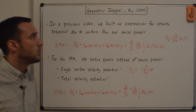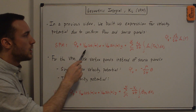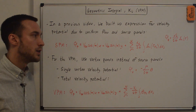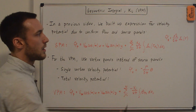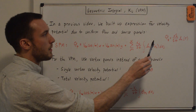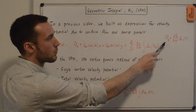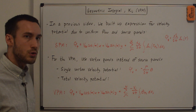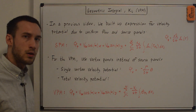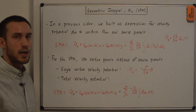Hey everyone. In a previous video we built up the expression for the velocity potential phi_p due to uniform flow and source panels that approximate the geometry of an airfoil. The term for a single source comes from building up more complex flows from a single source. The velocity potential induced by a single source is capital Lambda over 2 pi times the natural log of r, where r is the distance from the source to the point we're evaluating.